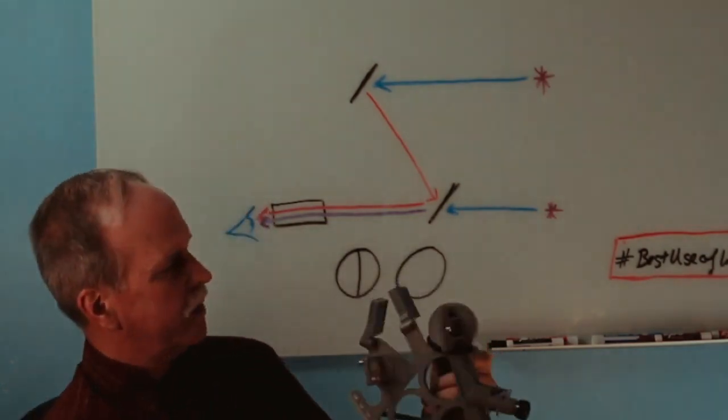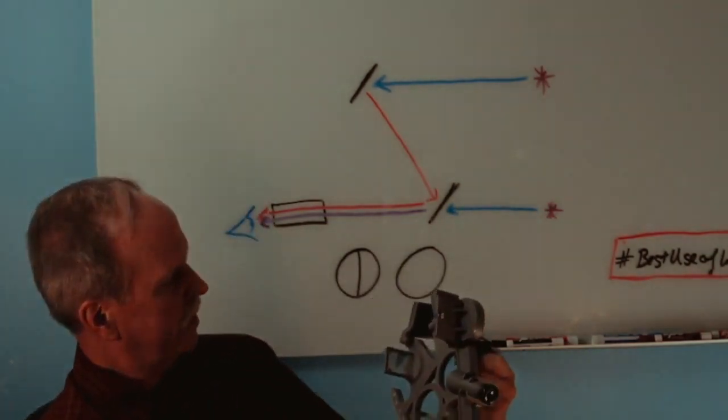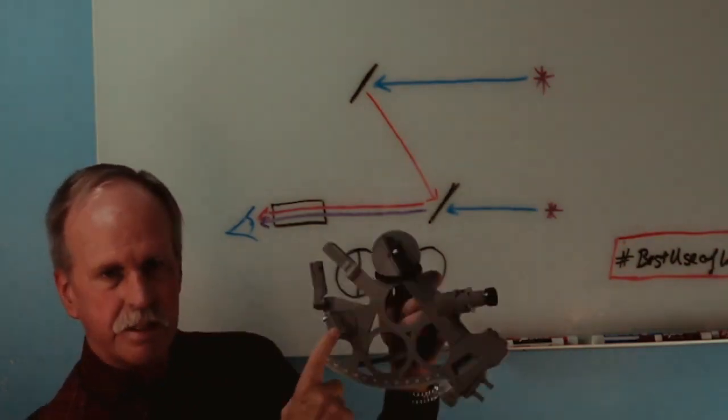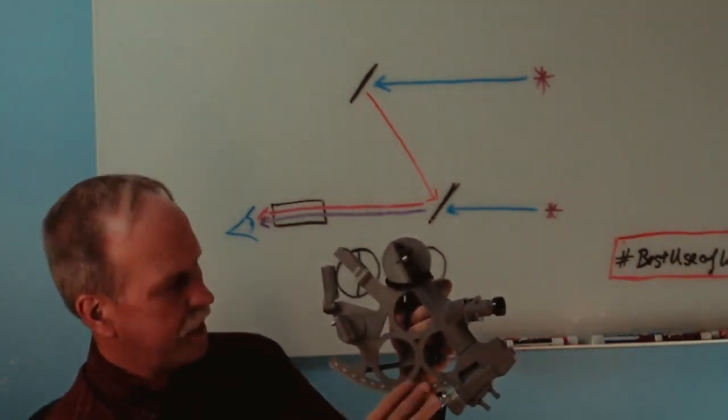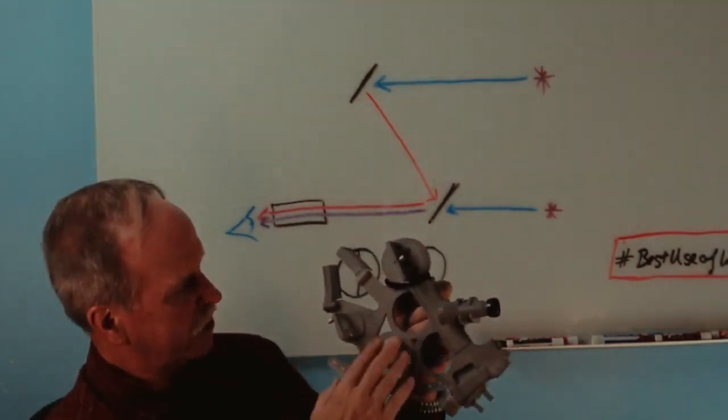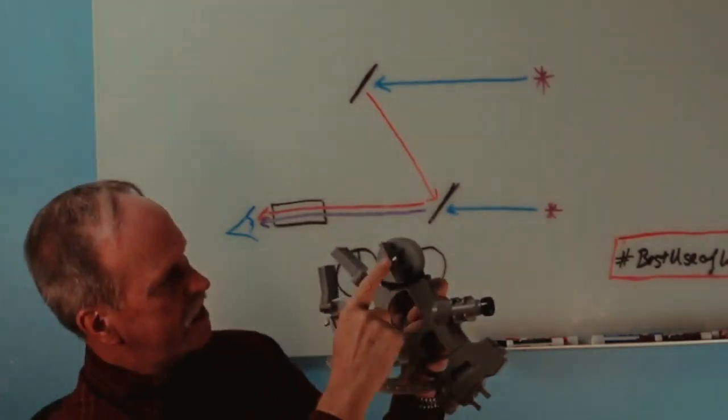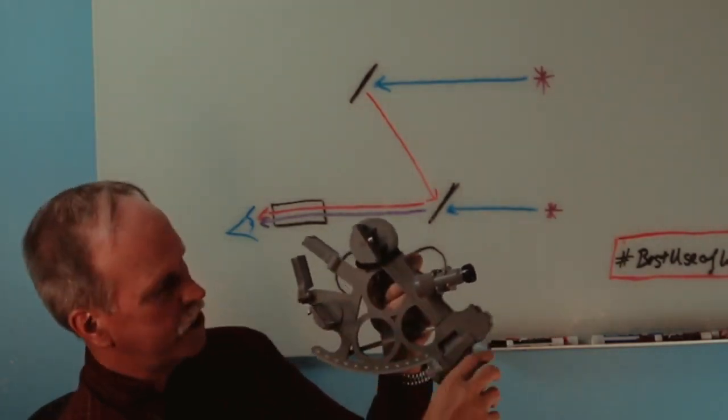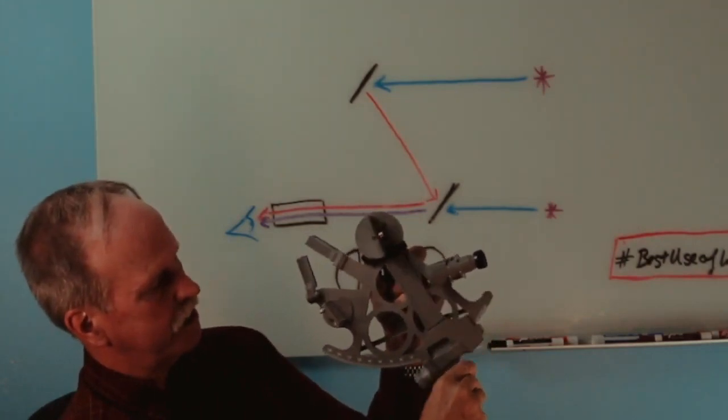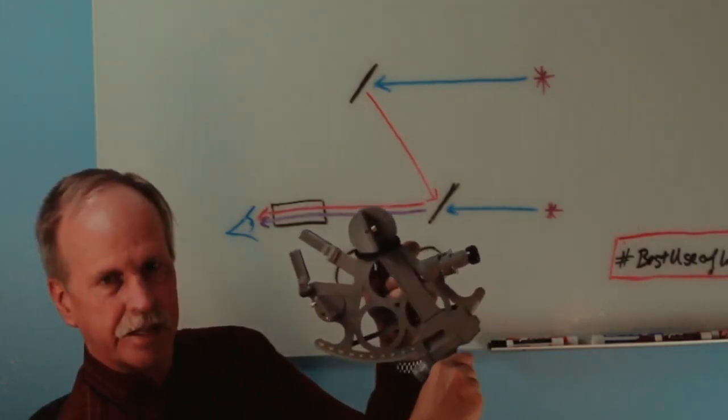Now here's the way a sextant works. This mirror is attached to the body of the sextant. This is called the arch. This is the body of the sextant. This mirror is attached to an armature that can move, and as you can see, you just move it like that.